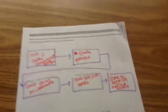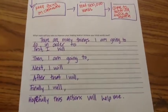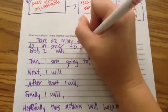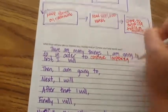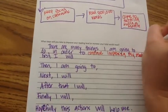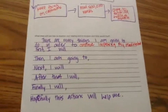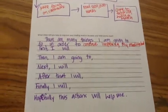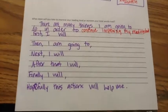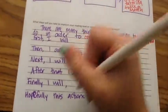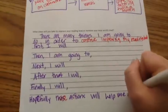Now I'm going to take my sequence map and translate it into this paragraph. And I've set up this paragraph to help your frame. So it says there are many things I'm going to do in order to continue improving my reading level. And then I'm going to list each of these steps as complete sentences. First I will, then I am going to, next I will, after that I will, finally I will. And then concluding with, hopefully these actions, or excuse me, it says this, but these actions will help me improve my reading level.